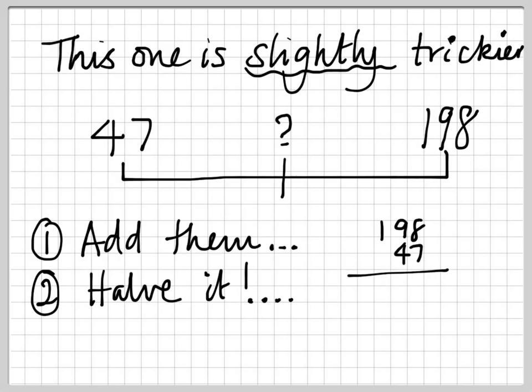198 and 47. 8 and 7 makes 15. 9 and 4, 13. Add 1 is 14. And then in total you've got 245.